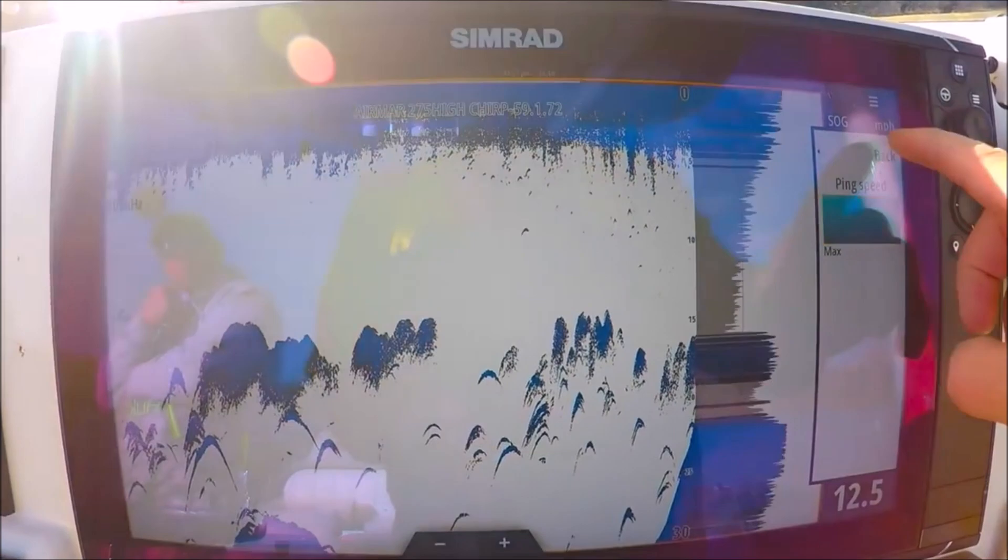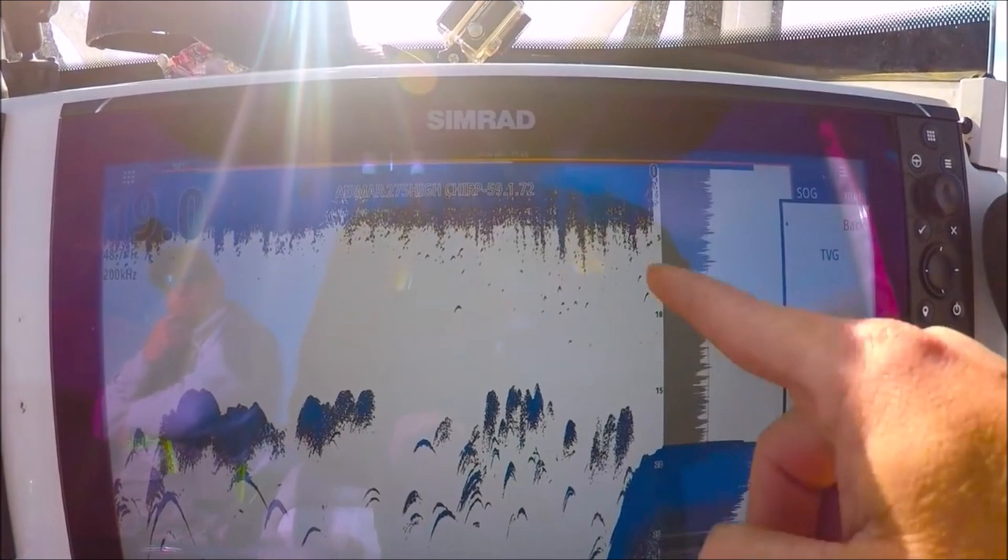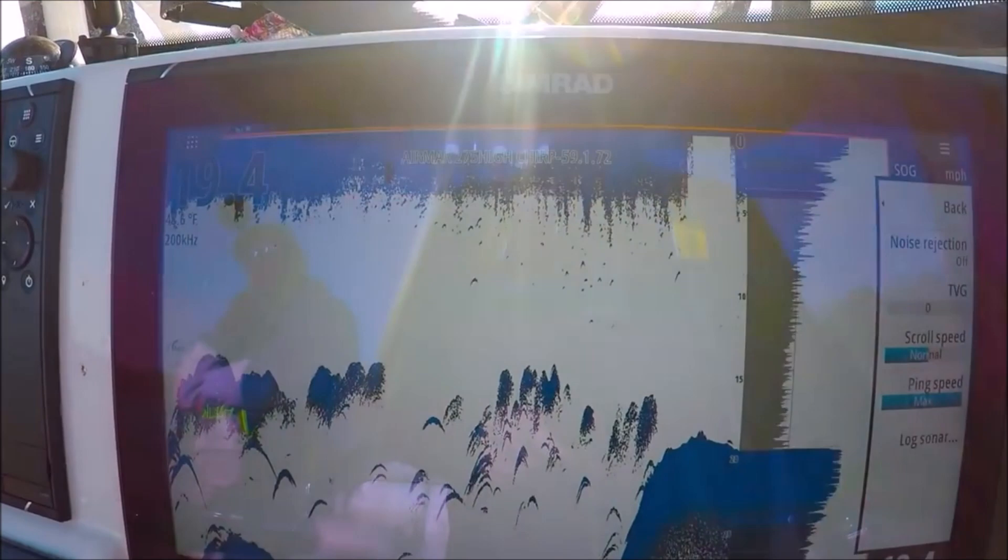TBG clears up the top few feet. For instance, if we go up to one or two, you'll start to see the returns disappear higher up in the water column. I'll still keep it at zero because I don't want to really miss anything.